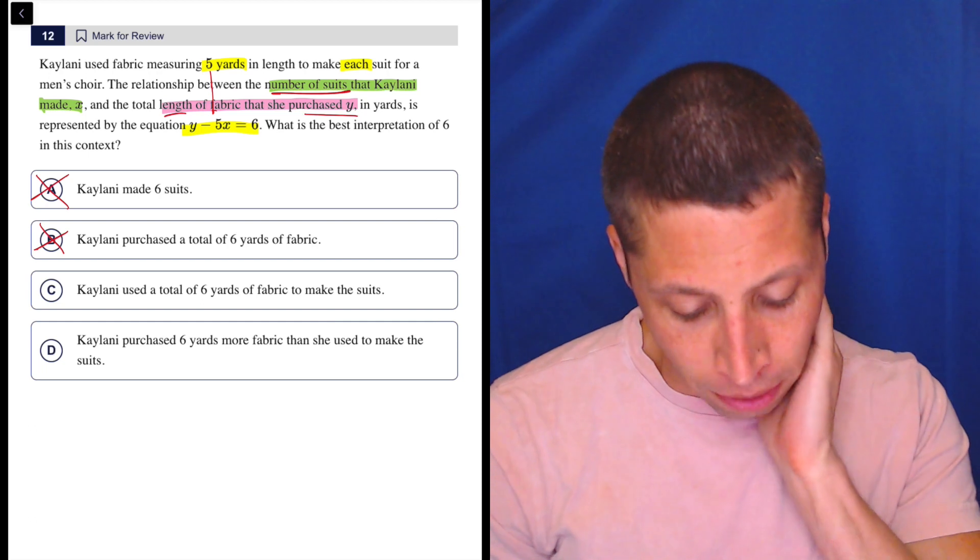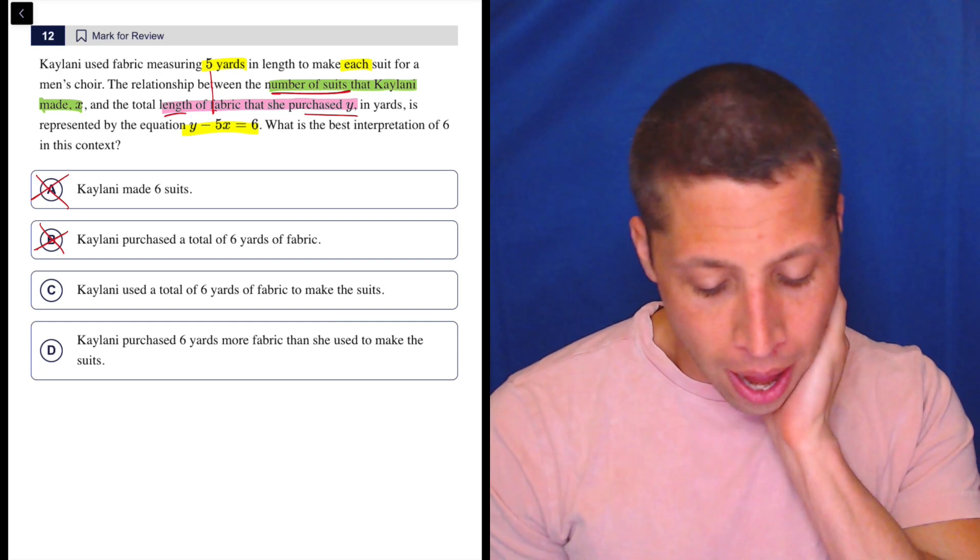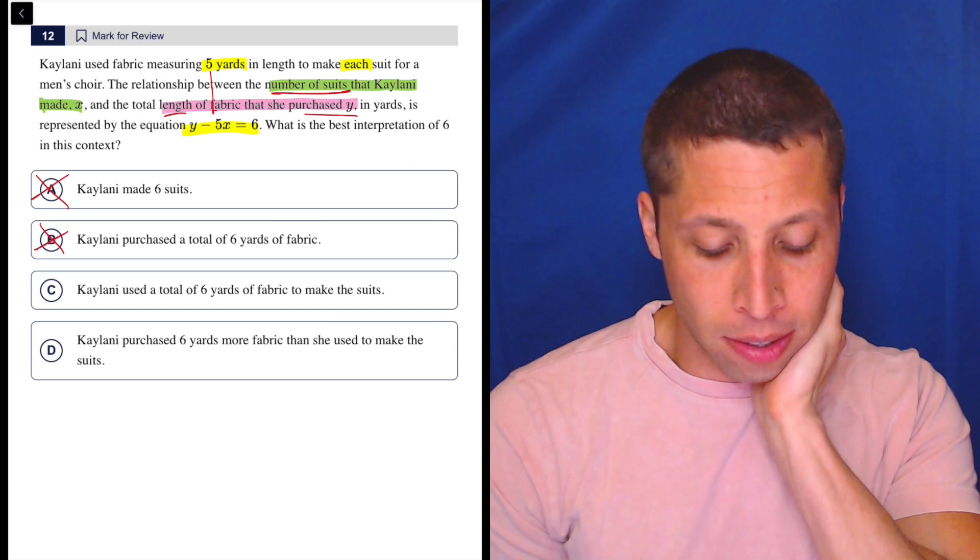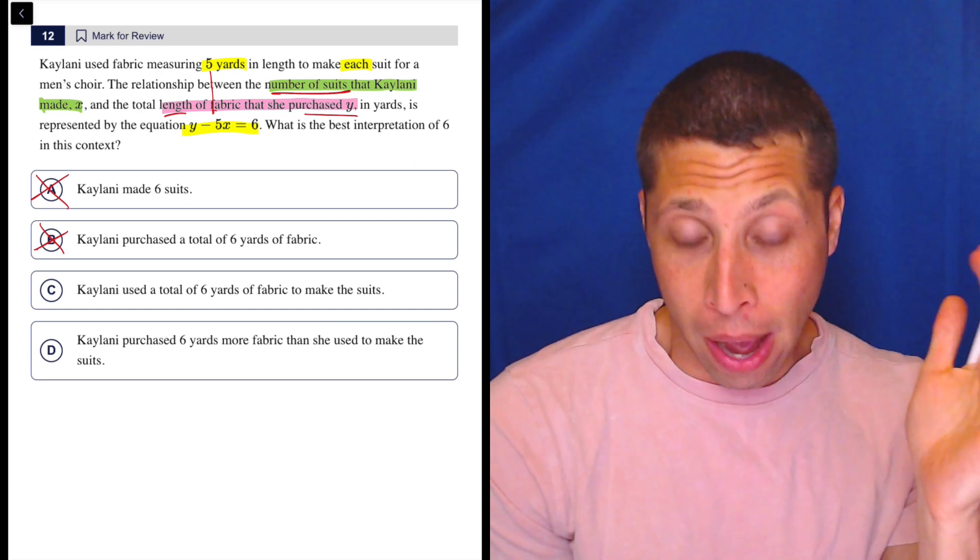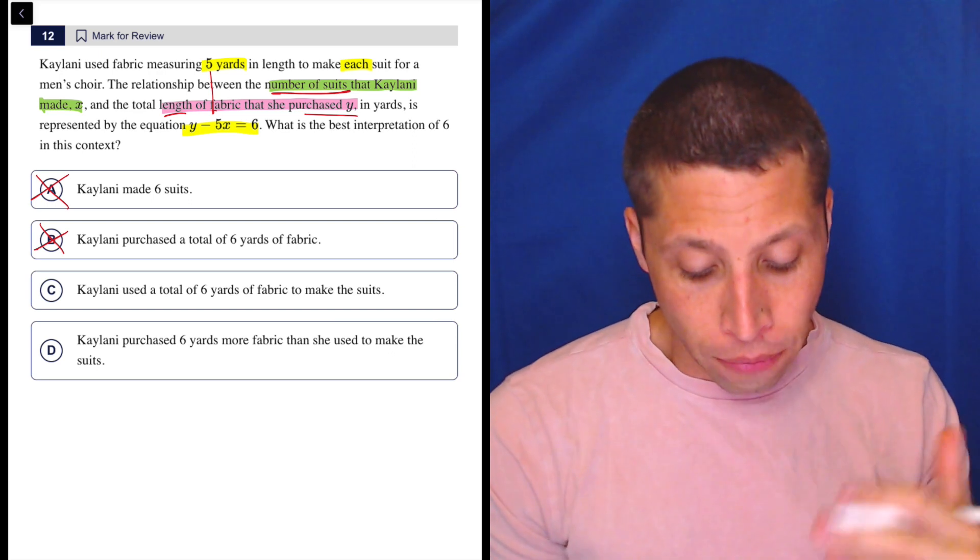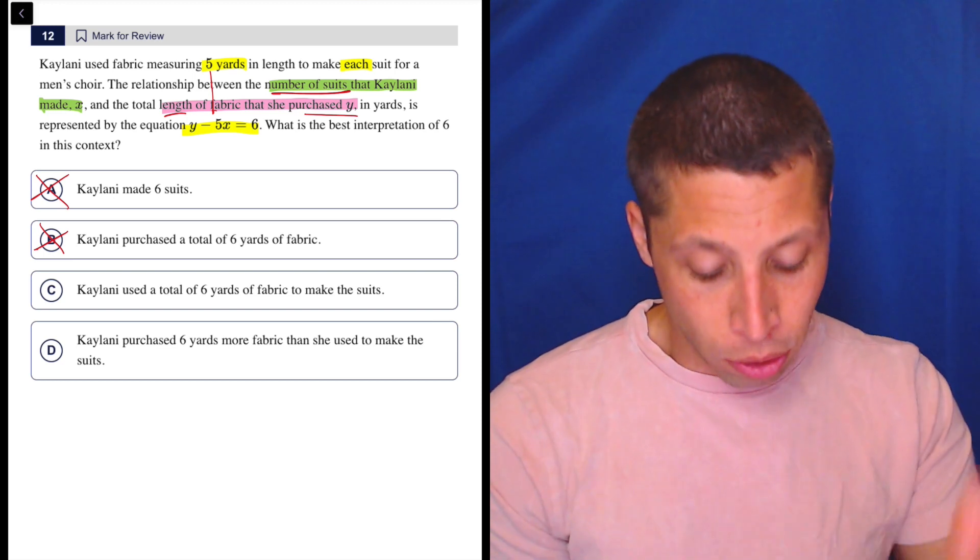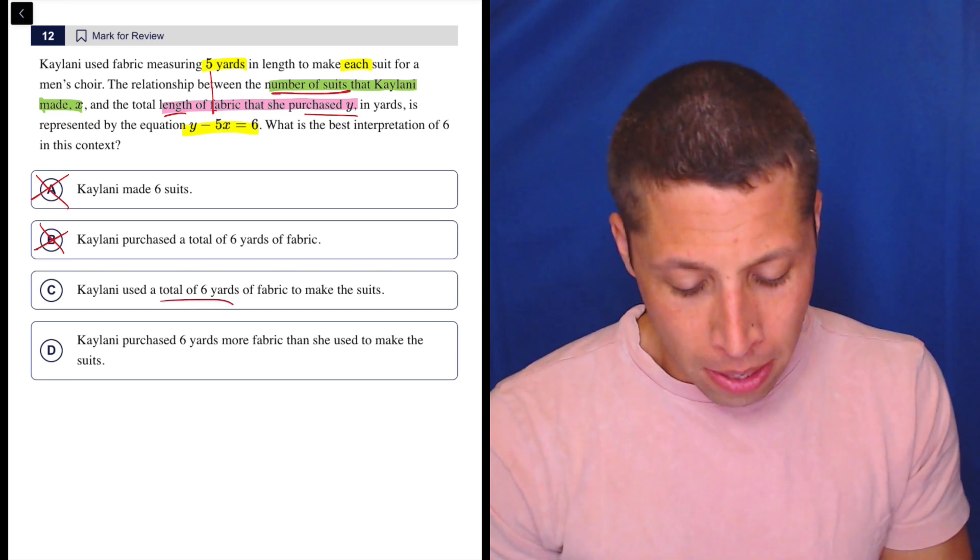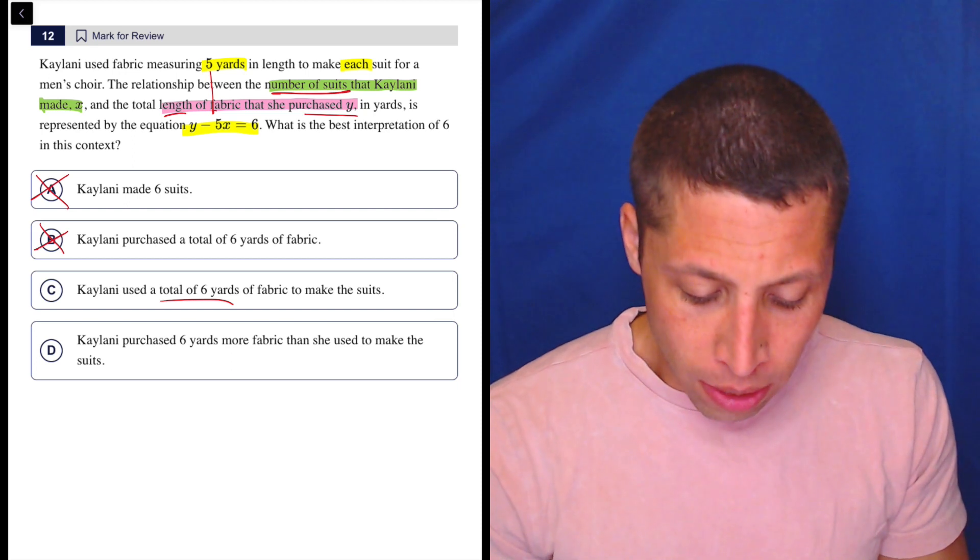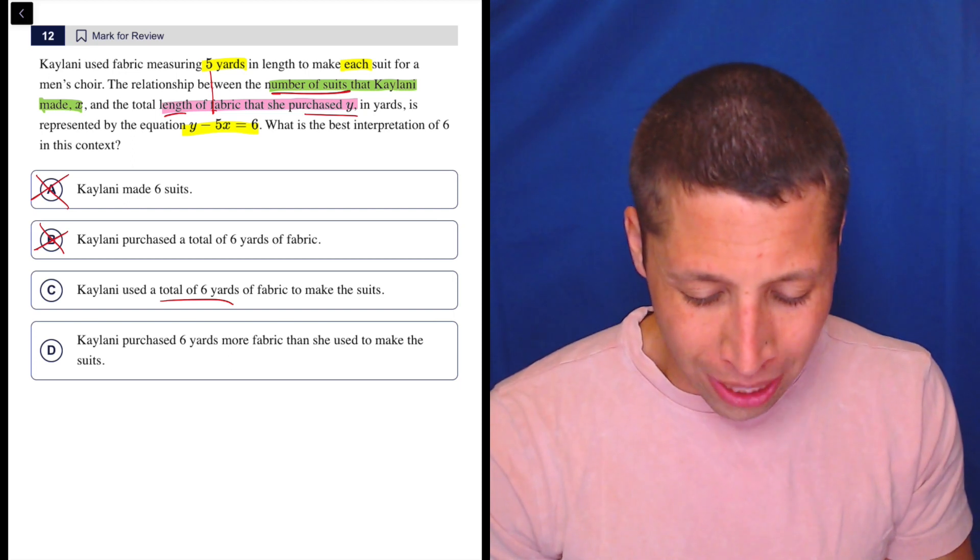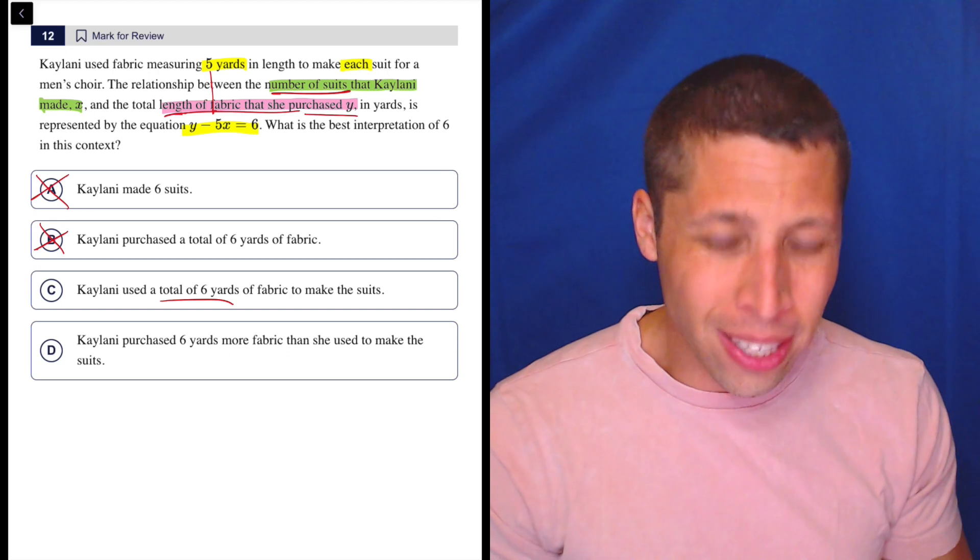Here we have to think a little harder. Kalani used a total of six yards to make the suits. My gut reaction is no because that's the five. The five is the amount she made from each suit. So this is a total but isn't that kind of what the y is, that she started with that amount?